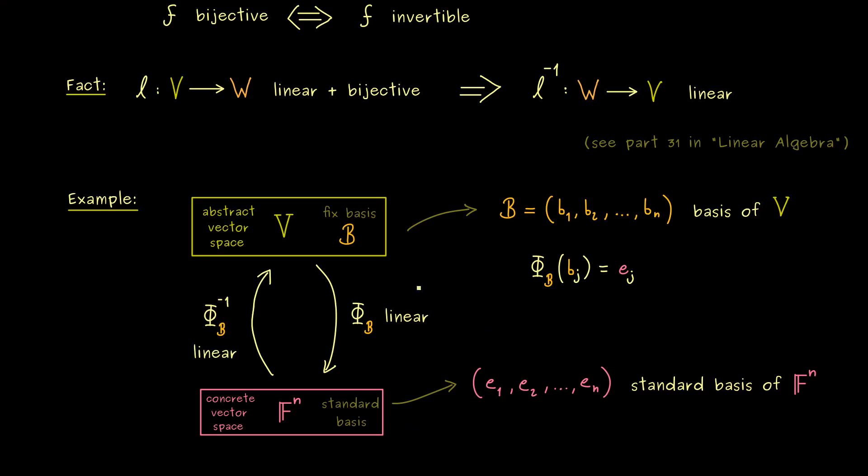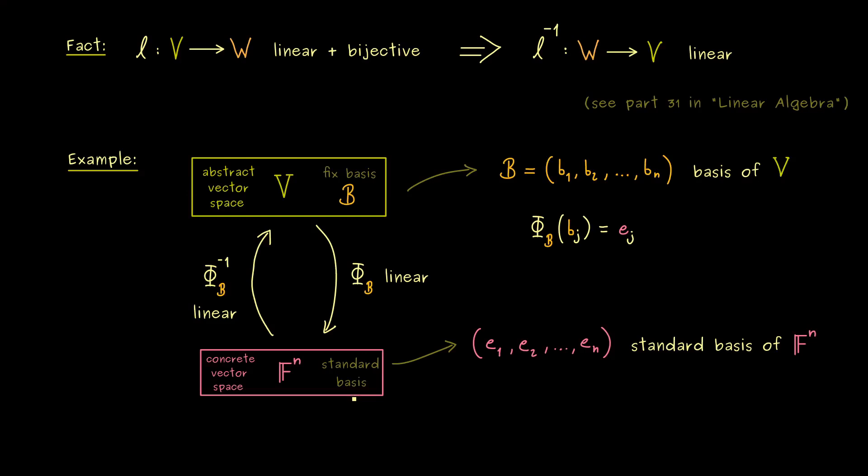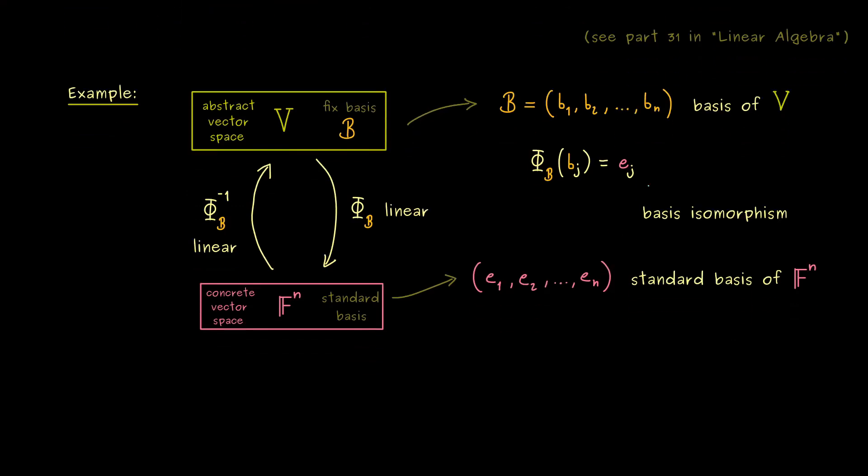So we have a linear map in both directions and that is what we call an isomorphism. So you see it makes sense to call phi_B the basis isomorphism with respect to the basis B.